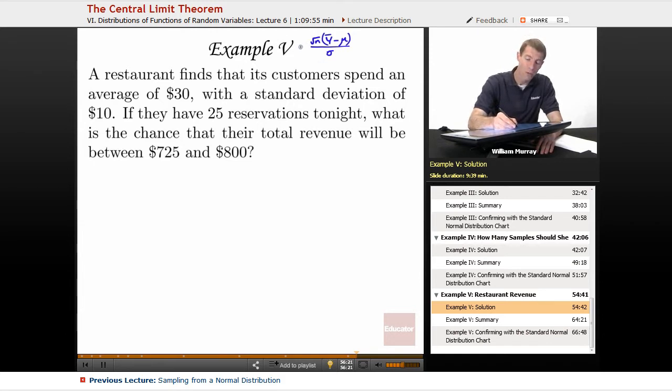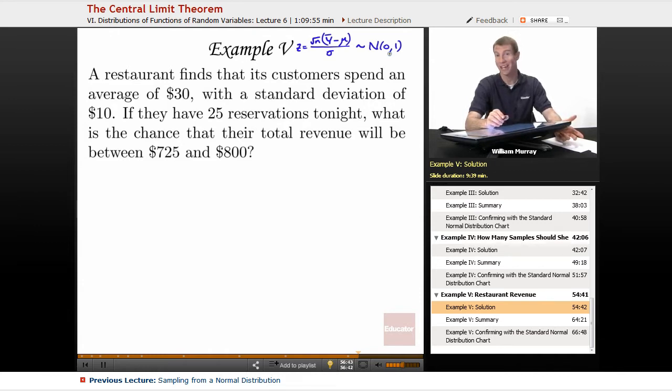The point of that was that that would give you a standard normal variable. So we're going to call it Z, and that's a standard normal variable. And in turn, the point of a standard normal variable is that it's very easy to calculate probabilities. The way I'm doing it is I'm using charts. You might use charts for your class, or you might have more sophisticated electronic tools, and that's okay with me. But what does this have to do with this restaurant?